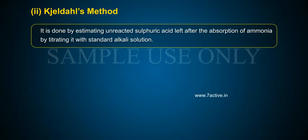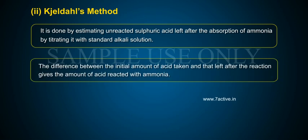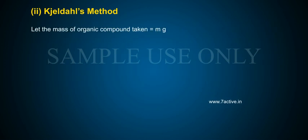It is done by estimating unreacted sulfuric acid left after the absorption of ammonia by titrating it with standard alkali solution. The difference between the initial amount of acid taken and that left after the reaction gives the amount of acid reacted with ammonia. Let the mass of organic compound taken equal M grams.